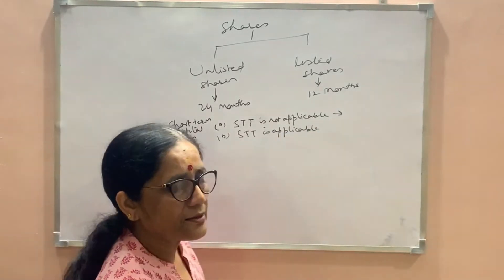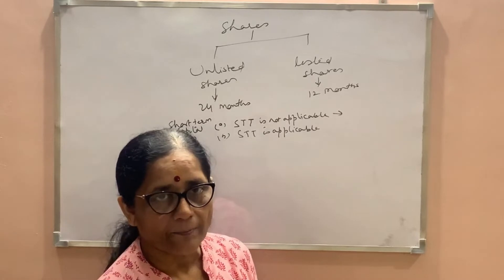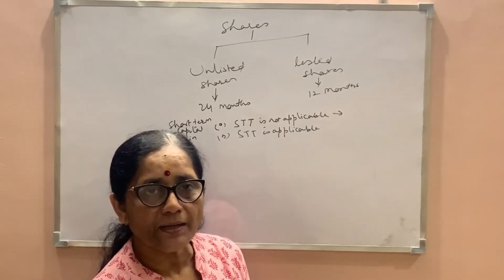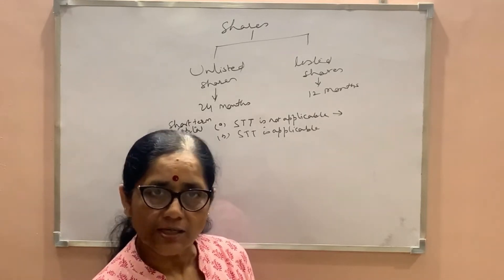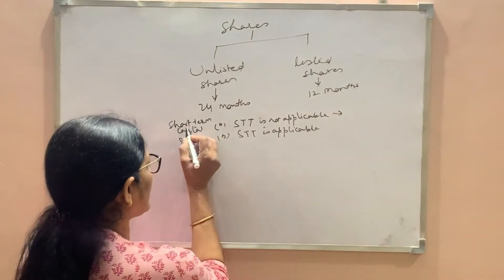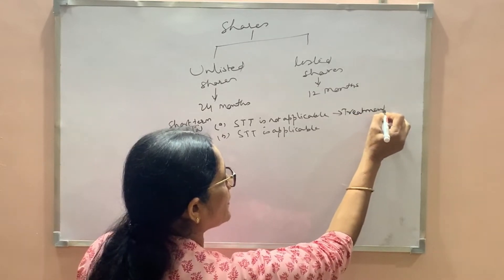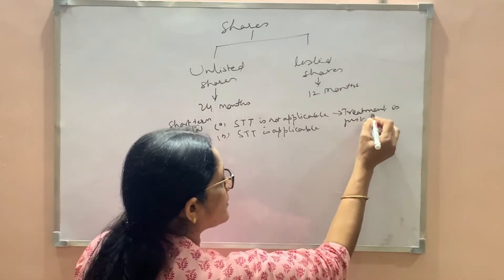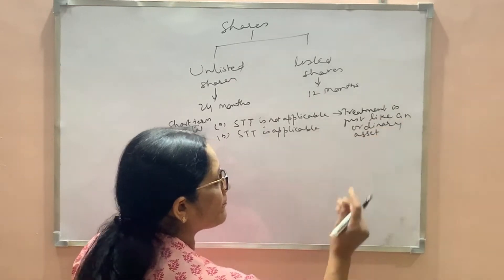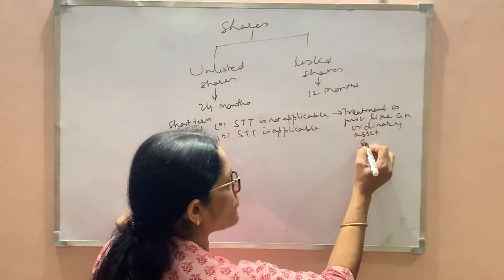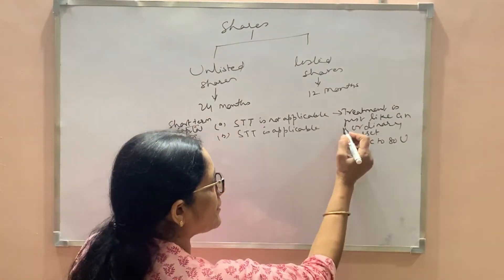Security transaction tax means the charge of the stock exchange that an assessee has to pay. So in case of short-term capital gain, if the security transaction tax is not applicable, then the treatment of short-term capital gain is just like an ordinary asset — it is added to gross total income and all the deductions from 80C to 80U will be available. The treatment is just like an ordinary capital asset.